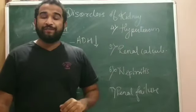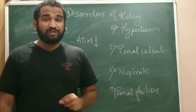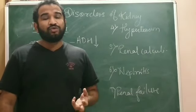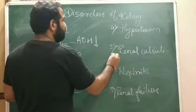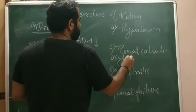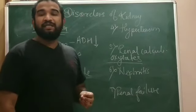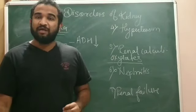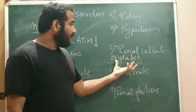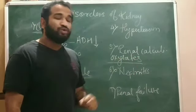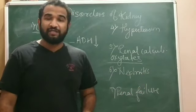The next disorder is renal calculi — basically kidney stones. These kidney stones are formed from insoluble salts like oxalates. These insoluble stones that are formed in the kidney are called renal calculi.